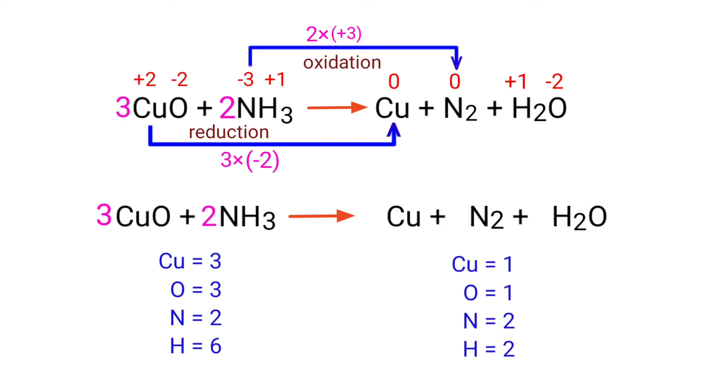In the reactant side there are 3 copper atoms, 3 oxygen atoms, 2 nitrogen atoms, and 6 hydrogen atoms. On the product side there are 1 copper atom, 1 oxygen atom, 2 nitrogen atoms, and 2 hydrogen atoms.